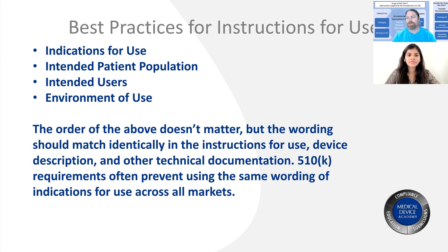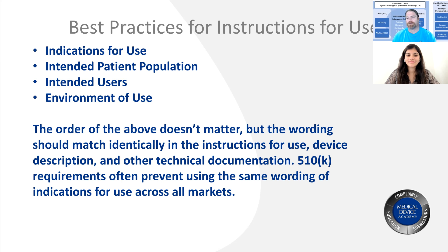You want to use the exact same wording — copy and paste that information into your device description. It is actually required to have the exact same wording in both places. This gives you the complete indication for the device or the complete intended purpose. We have a template for a device description created using the FDA guidance, the FDA RTA checklist, and the European checklist for what they want in a technical file. Just use those four headings and have a concise sentence or two for each one — that's best practice for writing your instructions for use.